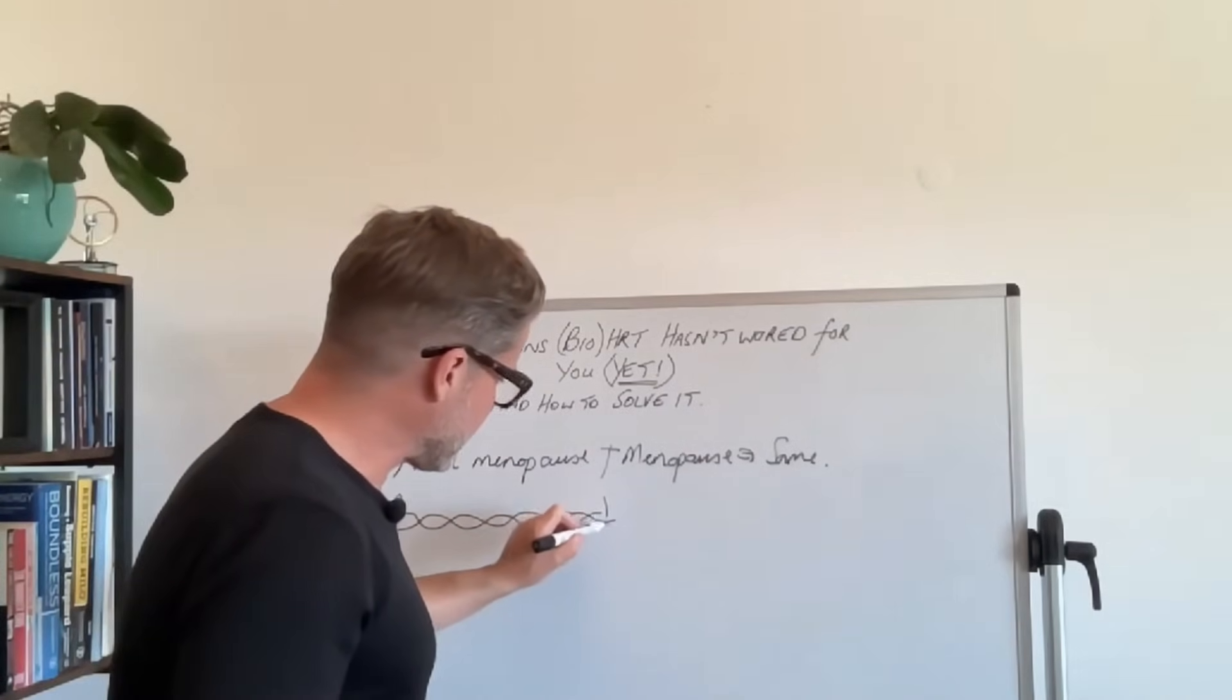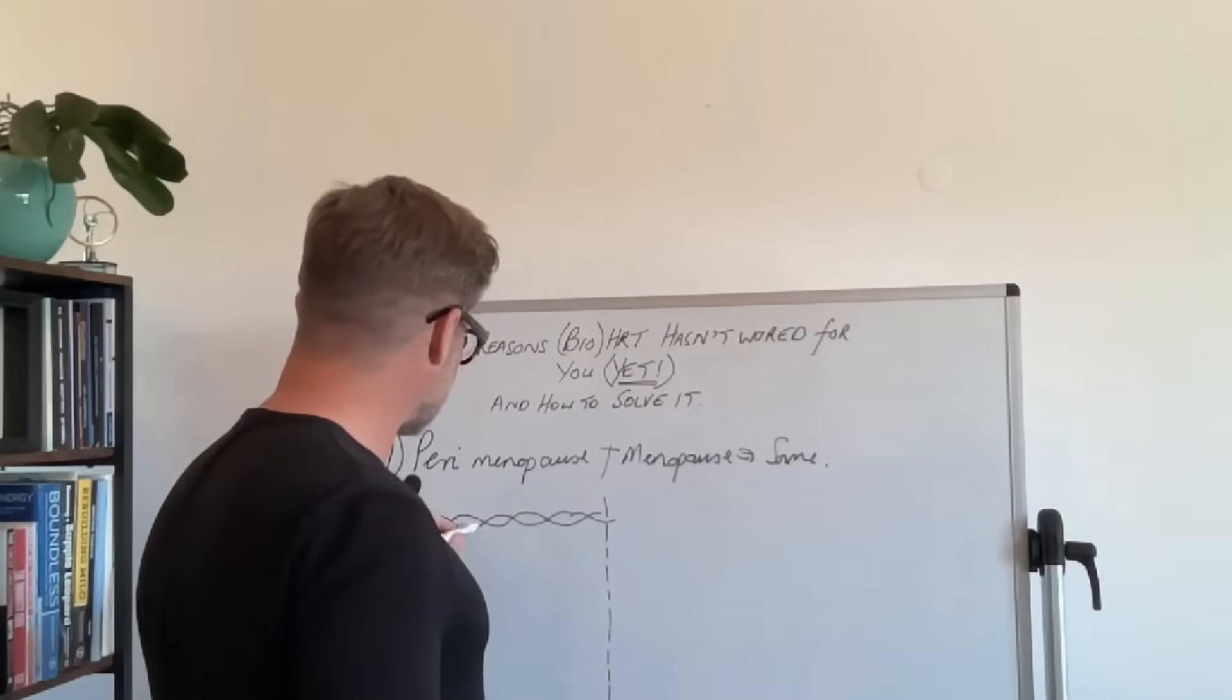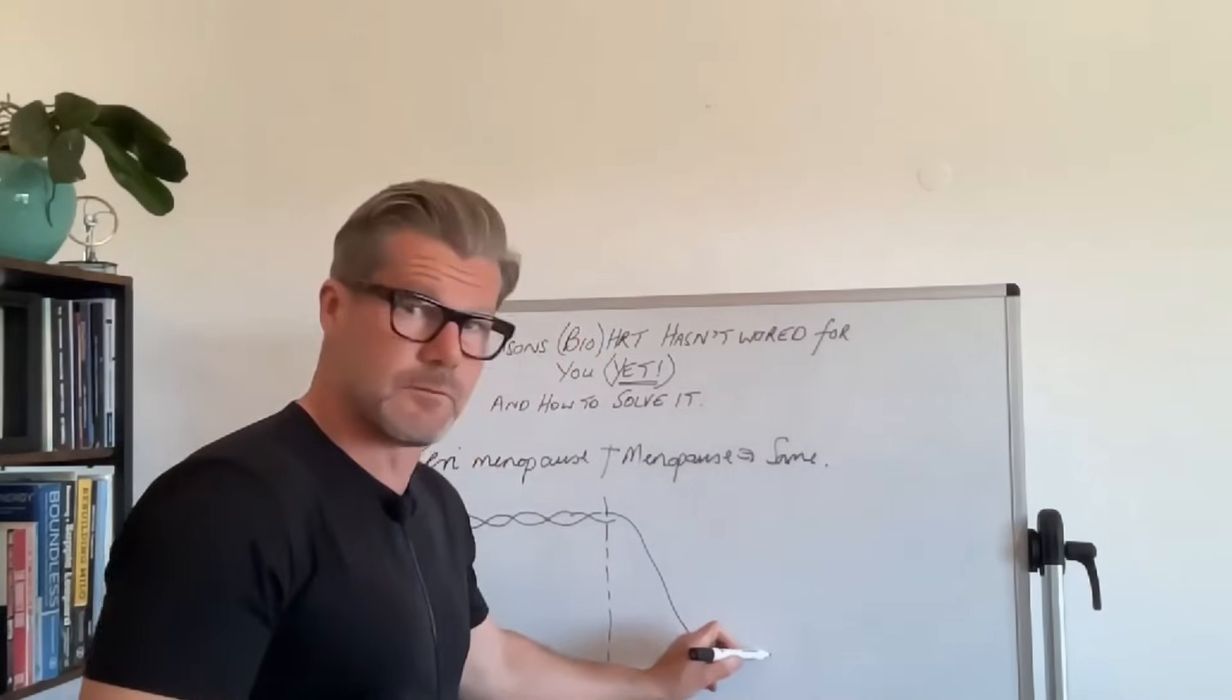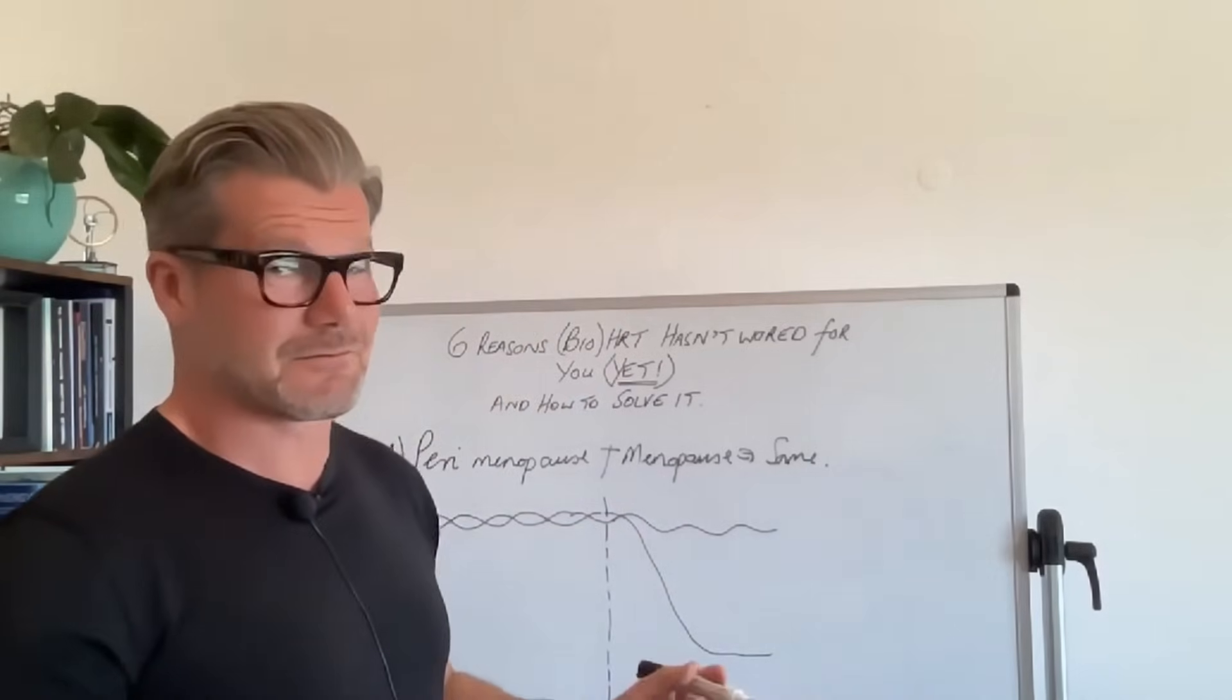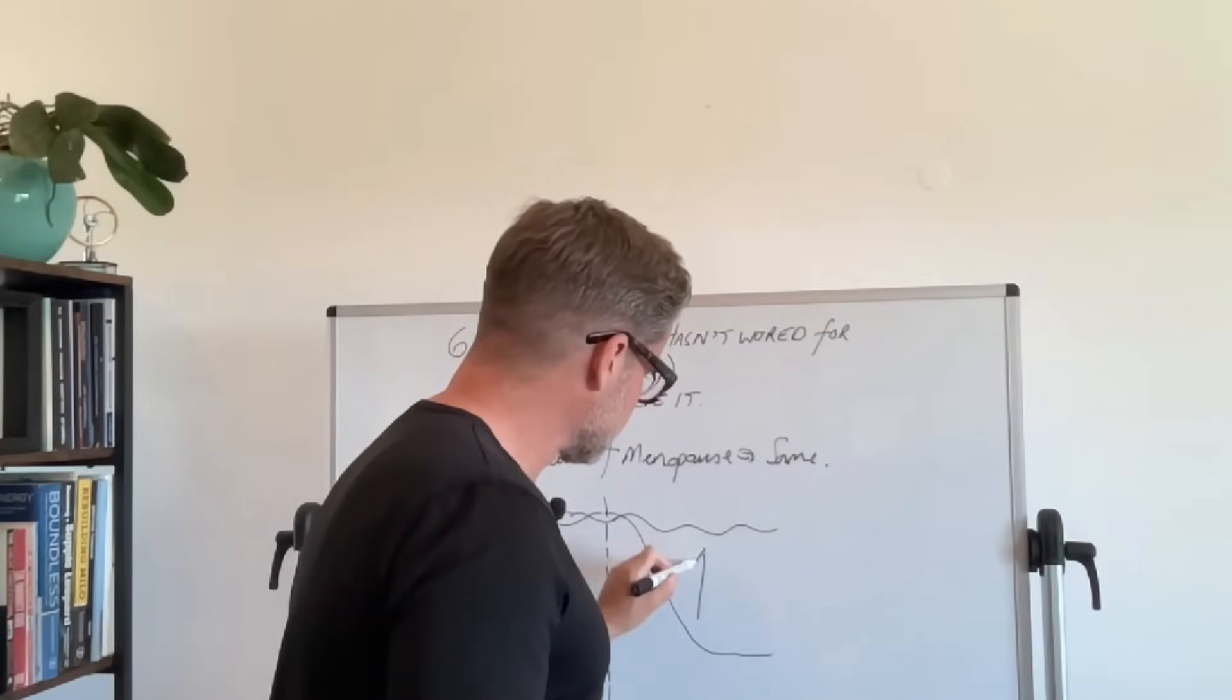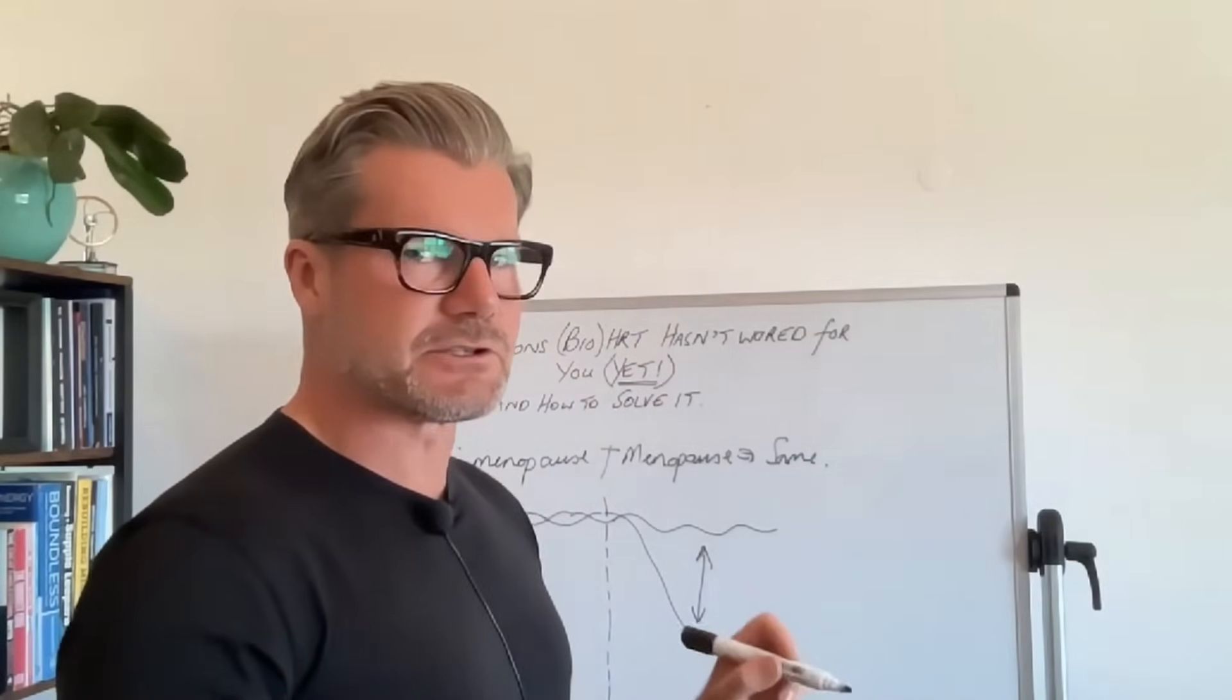When we get to perimenopause, what happens is the progesterone stork actually flies much lower, much sooner than the oestrogen stork. And oestrogen continues much like this, but this creates what we could call an altitude gap. And this is temporary oestrogen dominance.